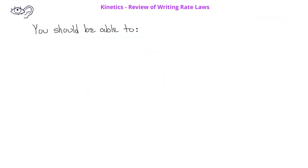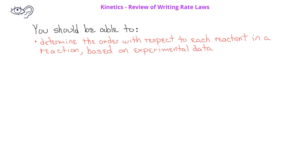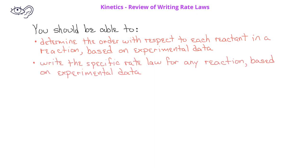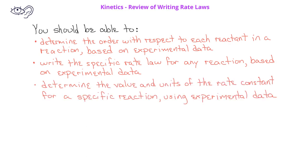By now, you should be able to determine the order with respect to each reactant in a reaction based on experimental data. You should also be able to write the specific rate law for a reaction. Finally, you should be able to determine the value and units of the rate constant for a given reaction using the experimental data from a data table.